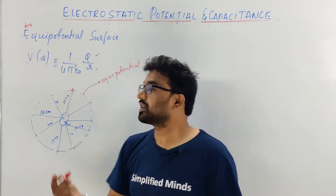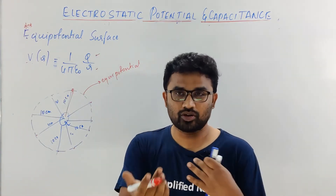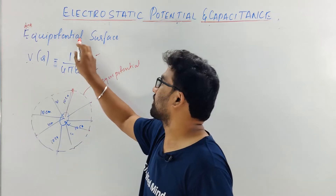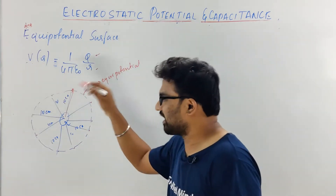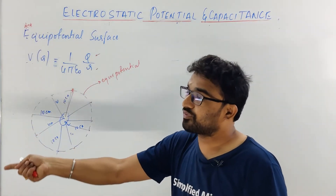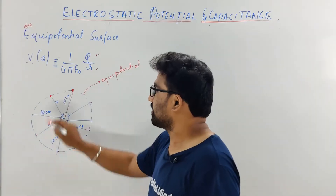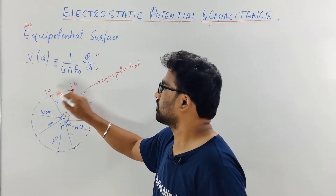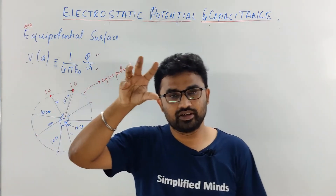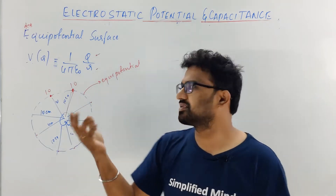Equipotential Surface is the locus of all the points where the potential is constant — or it can be zero, which is also constant. It is the surface — which can be a line or a region — where if you take any two points, the potential is constant and the potential difference is zero. For example, here is 10 and here is 10, so 10 minus 10 is zero.